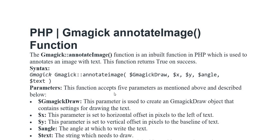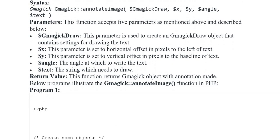Yeh function basically five parameters ko mention karta hai. Pehle hum discuss karte hain variable gmagick_draw. Yeh parameter tab use karte hain jab hum gmagick_draw object create kar rahe hote hain, jo settings kar raha hota hai jab hum drawing kar rahe hote hain — text ke liye hum ise use karte hain.